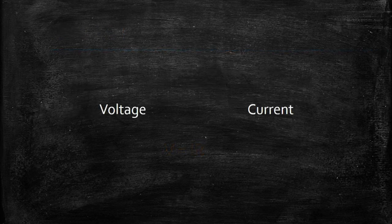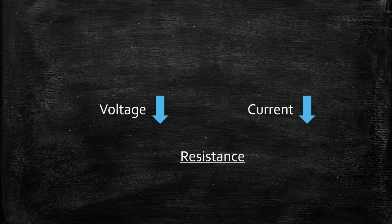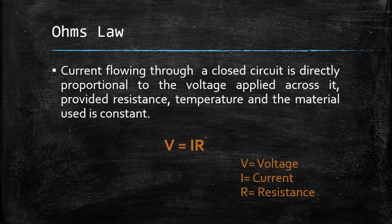In simple words, what Ohm told us is: if your voltage increases, your current is also going to increase, and vice versa — if your voltage decreases, your current is also going to decrease. But the resistance and all parameters which affect the resistance should remain constant. After this you can state that V equals I into R, where V is voltage, I is current flowing through the circuit, and R is resistance which should remain constant. This is the theory of Ohm's Law — but is it really true? We are going to do a practical to confirm it.